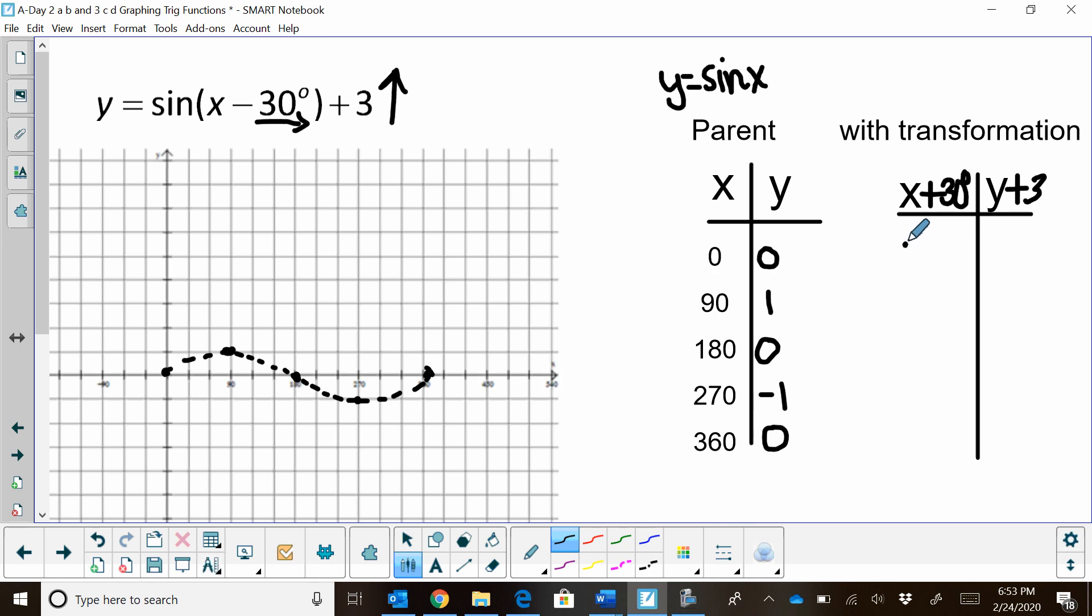Let's take this x column and add 30. So 0 plus 30 is 30, 90 plus 30 is 120, 180 plus 30 is 210, 270 plus 30 is 300, and 360 plus 30 is 390. So I've added 30 to all the x-coordinates.